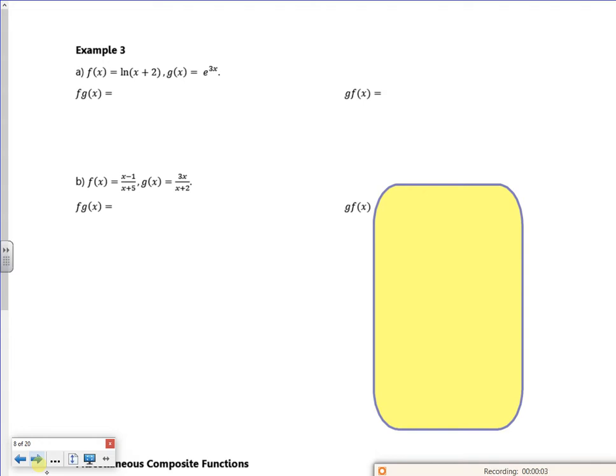Right then, so I'm on fg of x now. So I'm going to put g into f. So that would be log of e to the 3x plus 2. Now think about your log laws. If it was 2e to the 3x with the log, I could do something with it. But because it's e to the 3x plus 2, I can't do anything with it. So I can't split that up. That has to stay as it is.